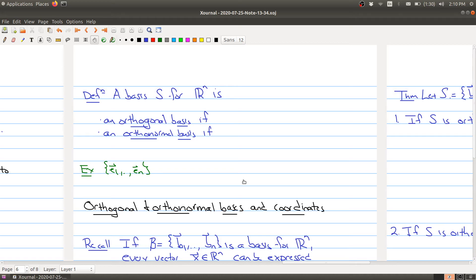So a basis S for Rn is an orthogonal basis if S is an orthogonal set of vectors, and an orthonormal basis if S is orthonormal. So that contains an orthonormal set of vectors. That means they're orthogonal and they all have length one. So we already saw that E1 through En is orthonormal, but because E1 through En is also a basis for Rn, we have that the standard basis is an orthonormal basis for Rn.